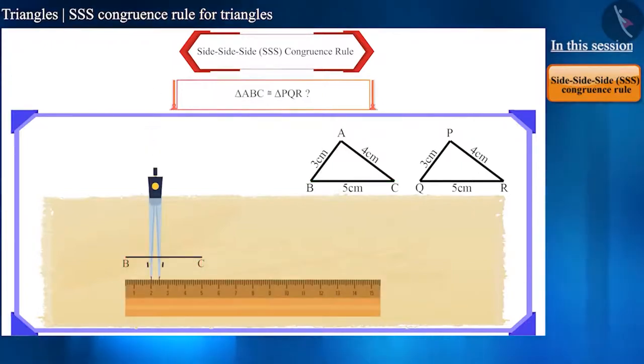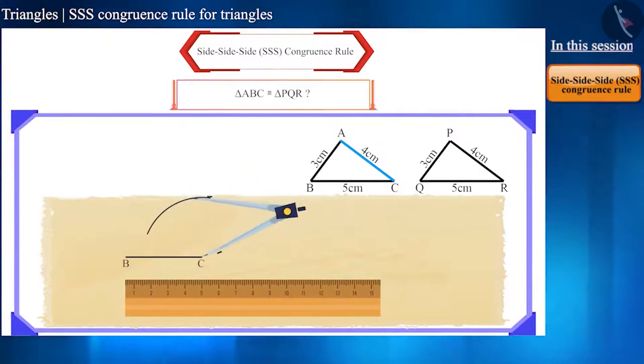Now, take the measurement of AC in a compass, which is 4 cm. Place it on point C and draw an arc. Now, take a measurement of 3 cm in a compass, place it on point B and draw another arc. The intersection point of these two is point A.